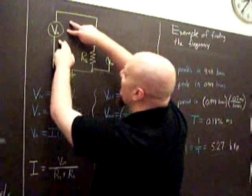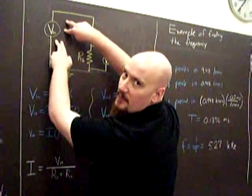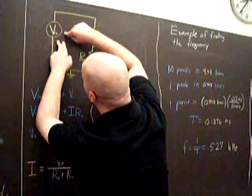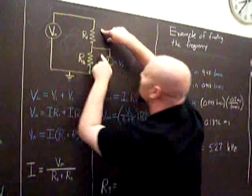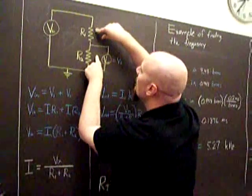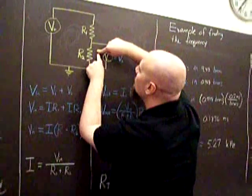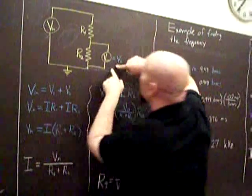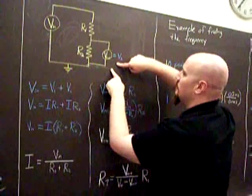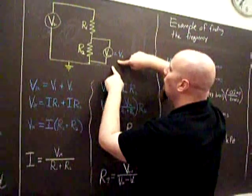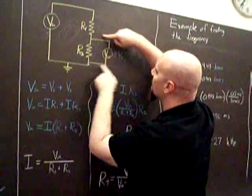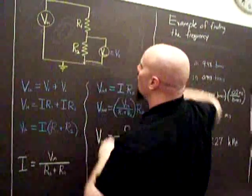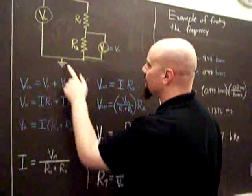In other words, the V-in would be from another circuit element. But for us it's the EMF, and then it goes through a series of two resistors, R1 and R2, and then our V-out will be measuring across R2, all of them grounded.